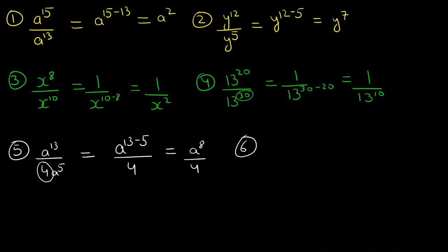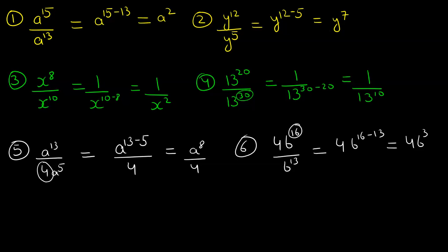Next we have 4b to the power of 16 over b to the power of 13. There is no other number in the denominator, so we simply write 4, and subtraction happens in the numerator because it has the bigger power of 16: b to the power of 16 minus 13, giving us 4b to the power of 3, or 4b cubed.